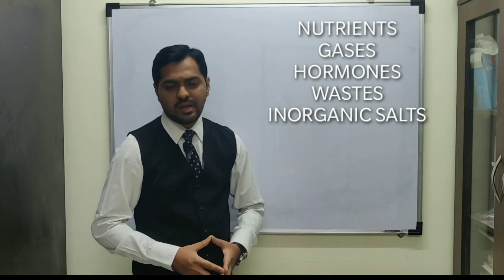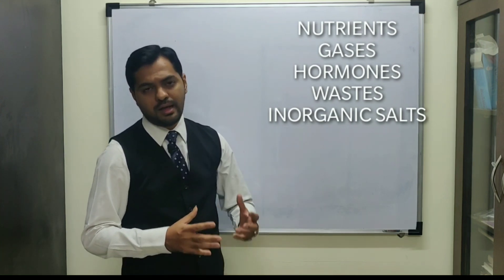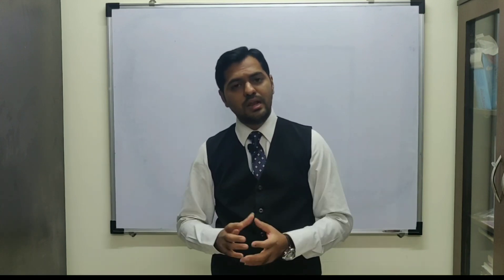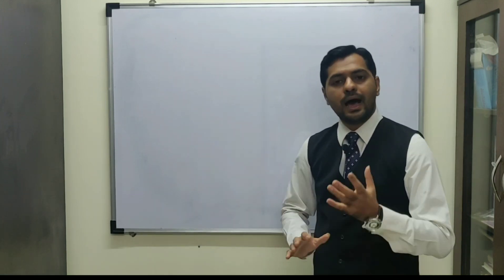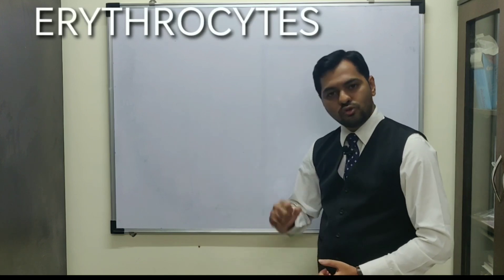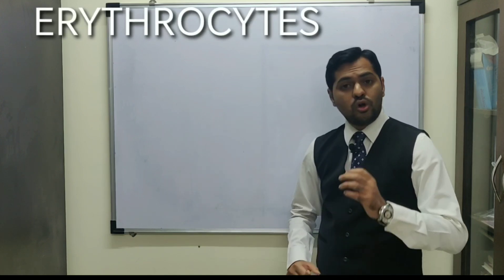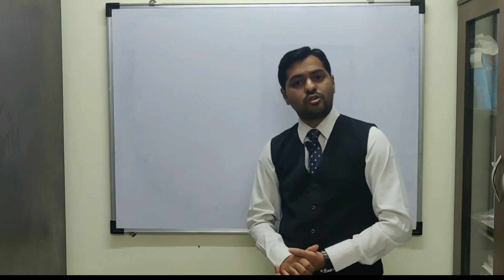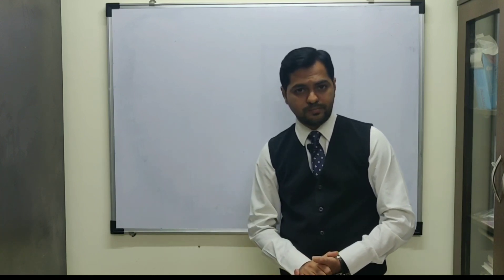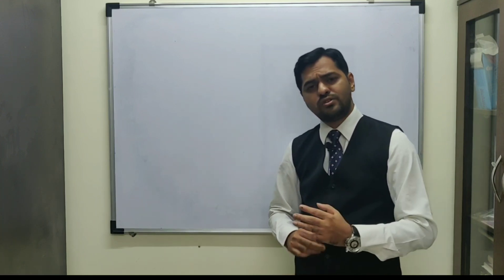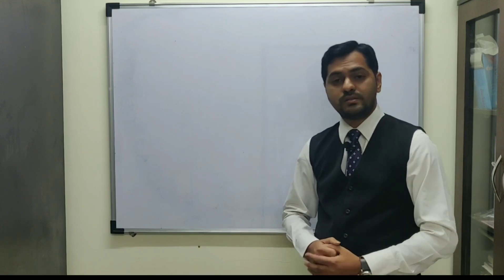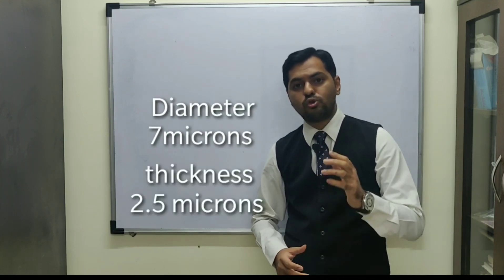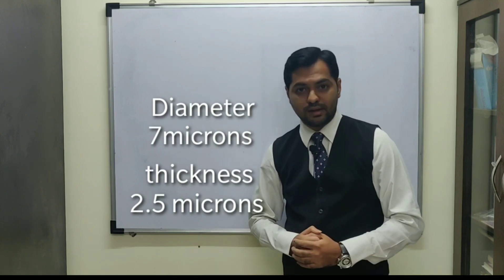Moving to the cellular part, there are three types of cells. Today's segment deals with RBCs or erythrocytes. 'Erythro' means reddish in color and 'cyte' means cell. RBCs are seven microns in diameter and have around 2.5 microns of thickness.